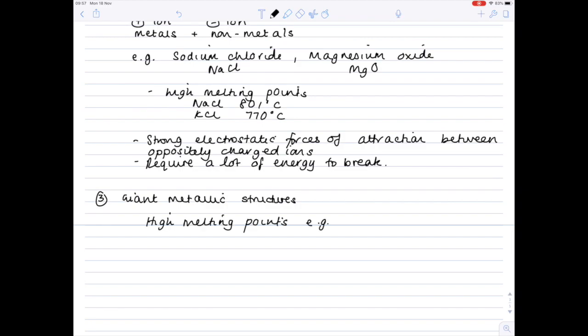For example, aluminium has a melting point of 660 degrees celsius. Magnesium has a melting point of 650 degrees celsius. Why is this? Well that's due to strong electrostatic forces of attraction between the positive metal ion and the sea of delocalized electrons.